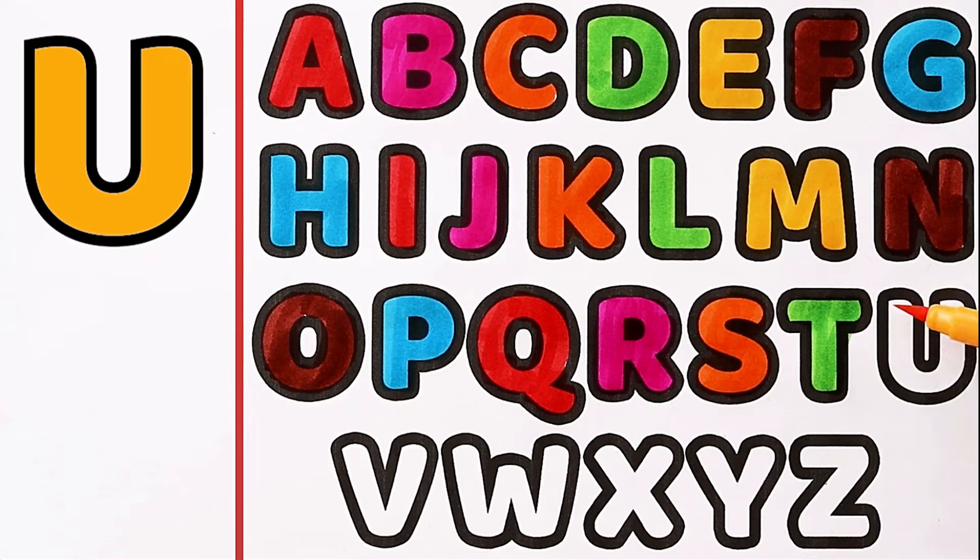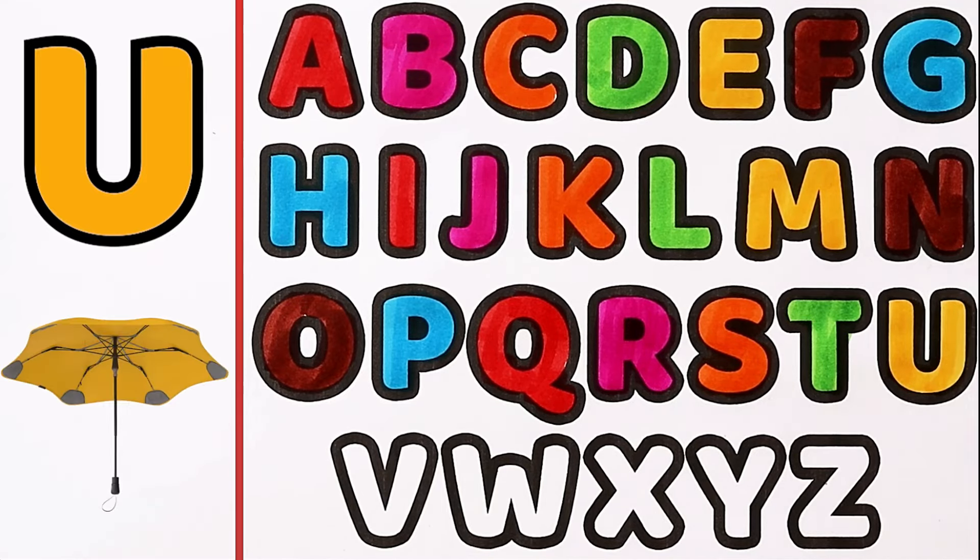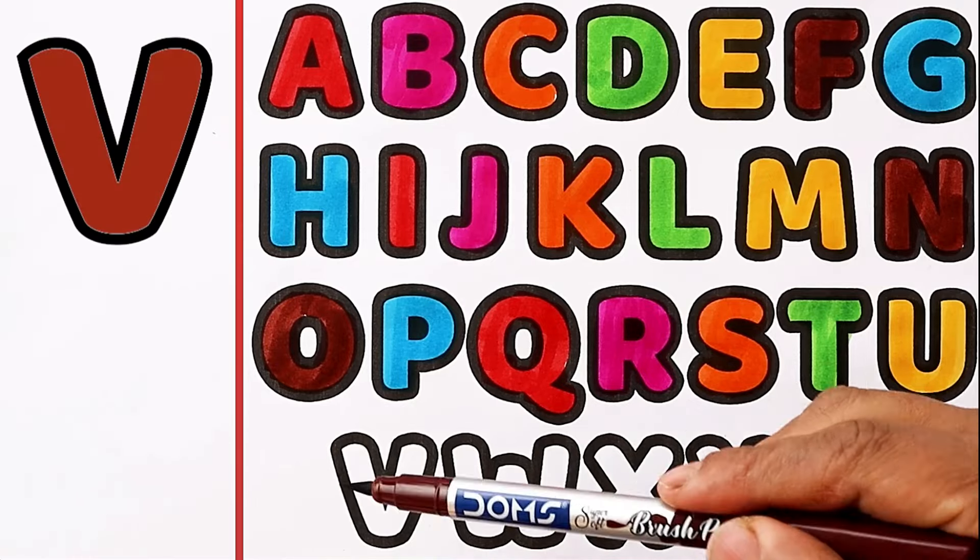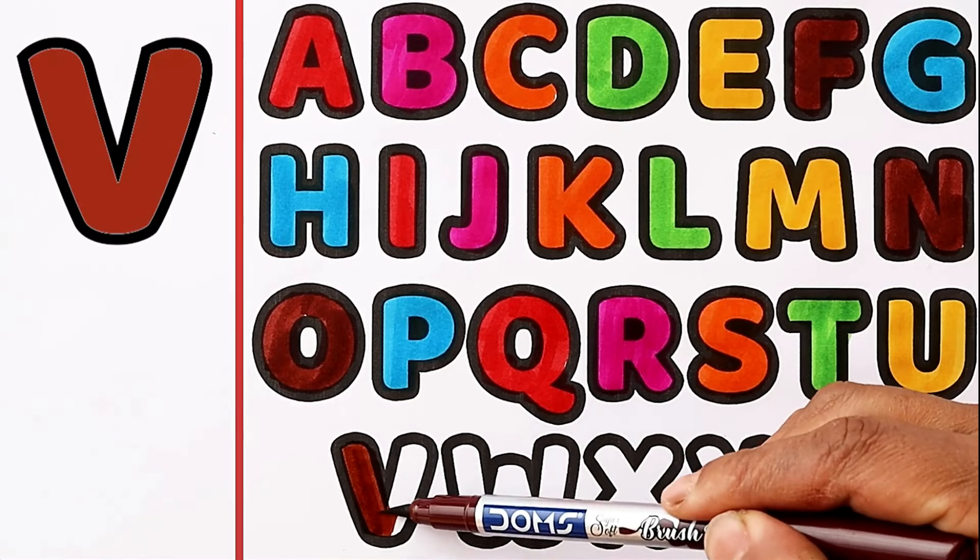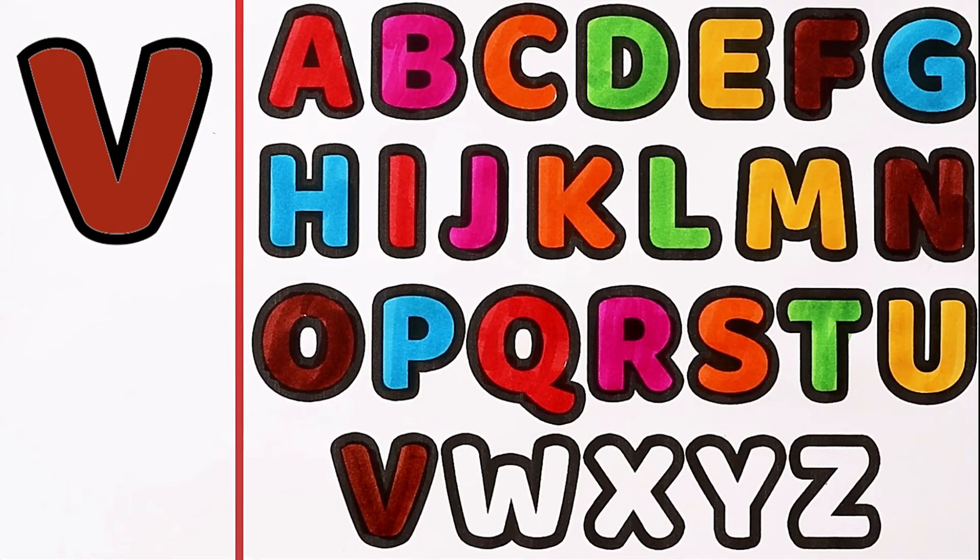U, yellow color, U for umbrella. V, brown color, V for van.